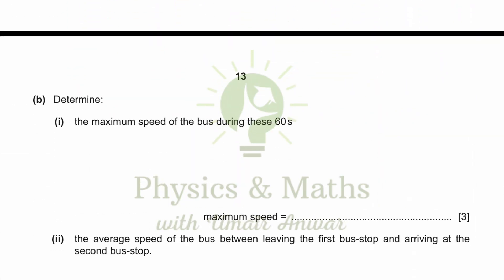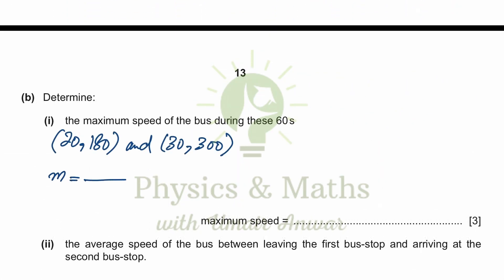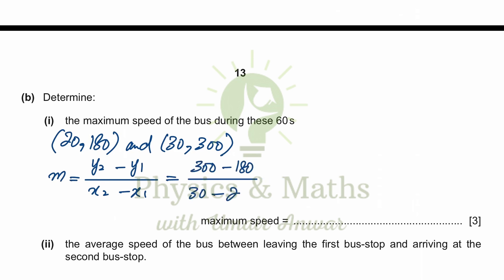The gradient m equals (y2 − y1) / (x2 − x1), which becomes (300 − 180) / (30 − 20) = 120 / 10 = 12 meters per second. So the maximum speed the bus obtained was 12 meters per second.